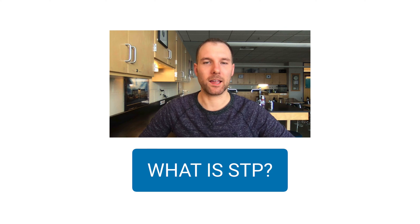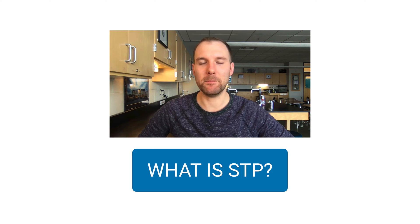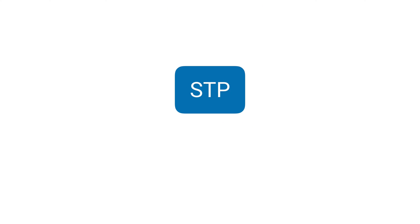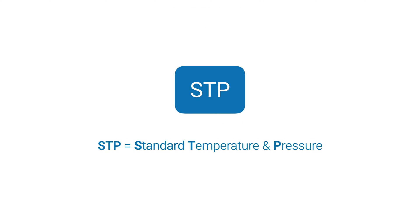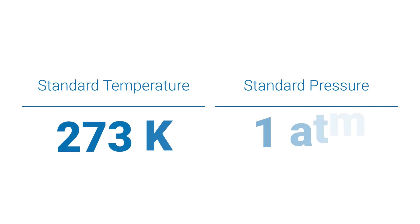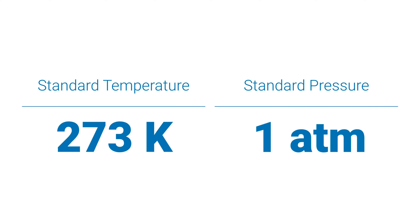In this quick video we're talking about what STP is in the context of chemistry. STP stands for standard temperature and pressure. Standard temperature is 273 Kelvin, which is the same as zero degrees Celsius, and standard pressure is one atmosphere, which is the same as 101.3 kilopascals and 760 torr, or 760 millimeters of mercury.